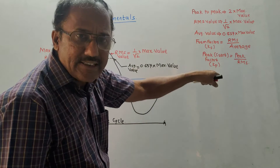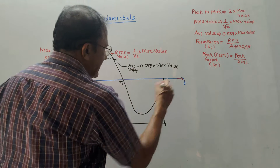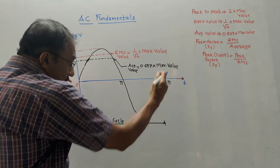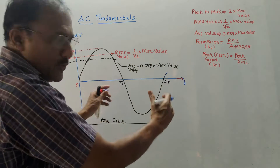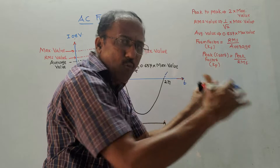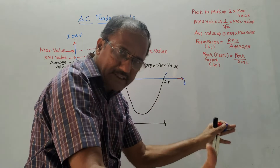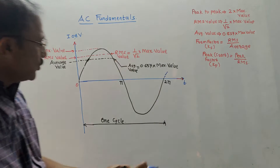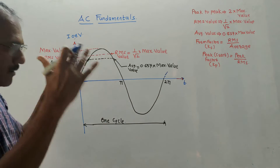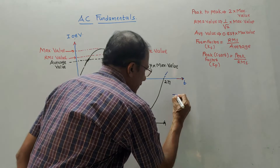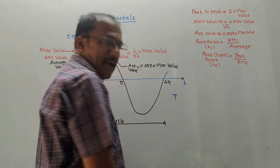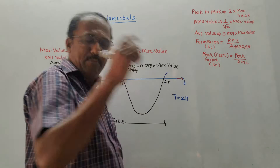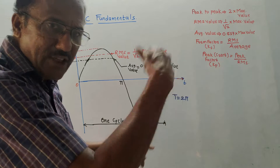If I continue drawing the graph it will be continuous till infinity. The particular value after which the same pattern of waveform repeats is known as the fundamental period, denoted by capital T. In this case the fundamental period is 2π, because after 2π the graph repeats.